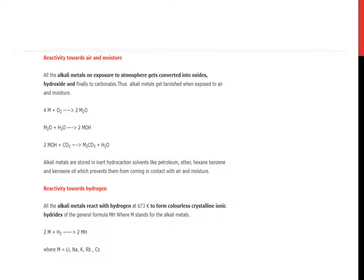Reactivity towards air and moisture. All the alkali metals on exposure to atmosphere get converted into oxides, hydroxides, and finally to carbonates. For example, when a metal reacts with oxygen, it gives M₂O. When this M₂O reacts with water, it gives MOH—metal hydroxide. It reacts with carbon dioxide, then it gives metal carbonate M₂CO₃.